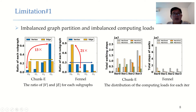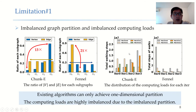Due to the imbalance in the number of vertices or edges, it inevitably leads to imbalanced computing nodes between machines. The right two figures show the result of running random walks, where the y-axis is the total working steps representing the number of computing tasks. We can conclude that the computing nodes are very imbalanced for both chunkE and Fennel. In conclusion, existing widely used graph partition algorithms can only achieve one-dimensional balance, and the other dimension can be very imbalanced, leading to highly imbalanced computing nodes.